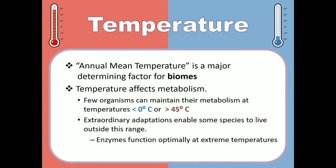Temperature is another abiotic component of the environment. Some places are colder and some are warmer — arctic tundra is freezing most of the year, while deserts and tropical ecosystems are extremely hot. Some areas are temperate climates, with an intermediate temperature that goes up and down with the seasons. Each environment has an annual mean temperature — that is, an average annual temperature — which is a big determiner of what kind of biome you'll find there.